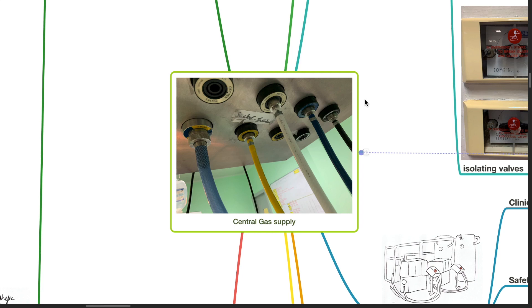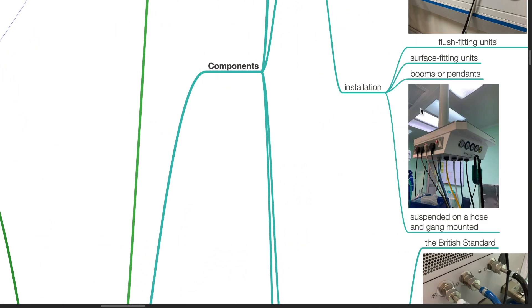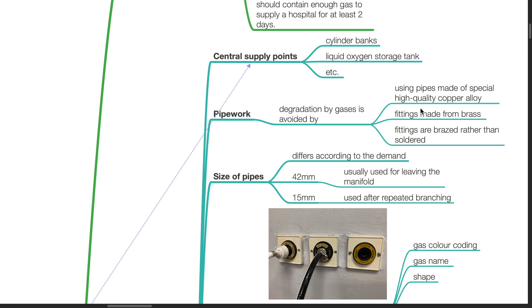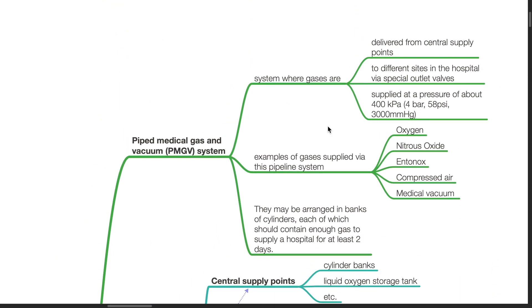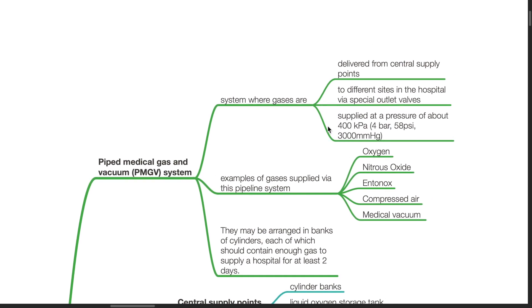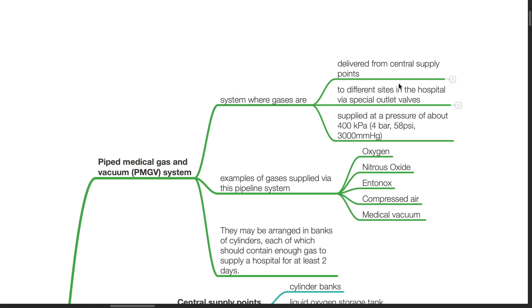Good evening, Dr. Phil here. Today we will be discussing central gas supply. Piped Medical Gas and Vacuum System is a system where gases are delivered from central supply points to different sites in the hospital via special outlet valves.